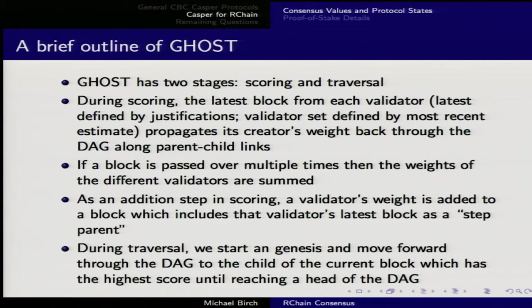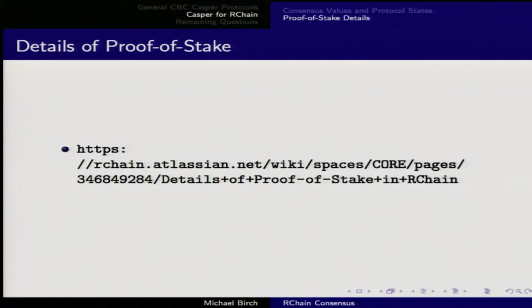Each validator's weight propagates back through the DAG along parent-child links; when a block is passed over multiple parent links the weights are summed. As an additional step in scoring, a validator's weight is added to a block which includes that validator's latest block as a step-parent. During traversal, we start at Genesis and move forward through the DAG to the child of the current block which has the highest score.